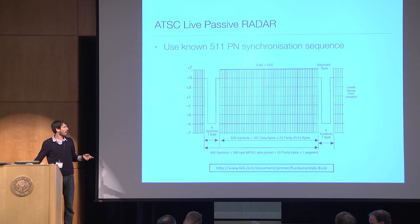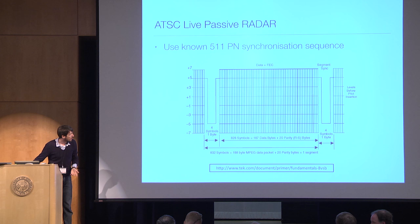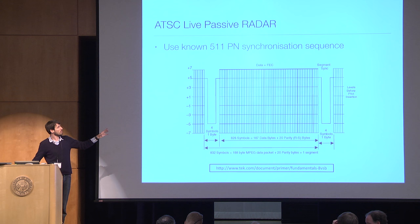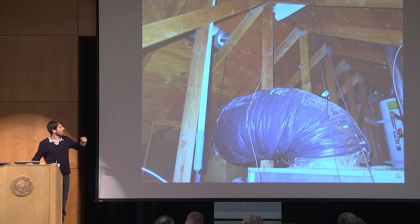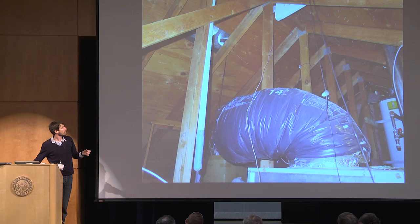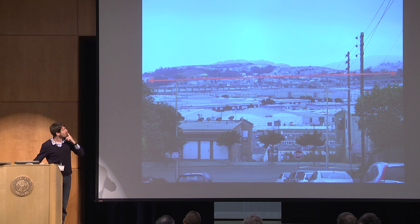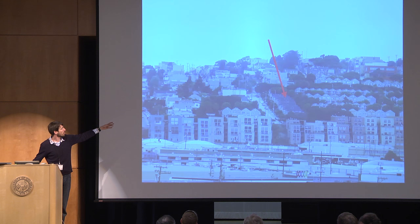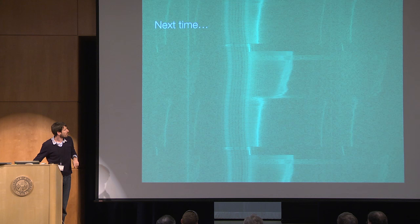For passive radar: ATSC digital TV has a nice long pseudo-random sequence it uses to synchronize receivers and equalize for the channel. If you use that as the filter for your correlator and set up some antennas in your attic, you can look at highways. From where I live in San Francisco, with cars moving back and forth, you can set up antennas with a good view and detect those targets.